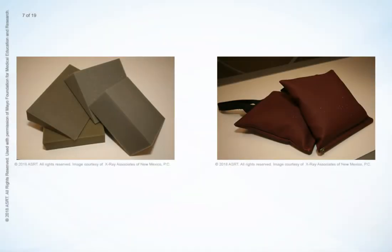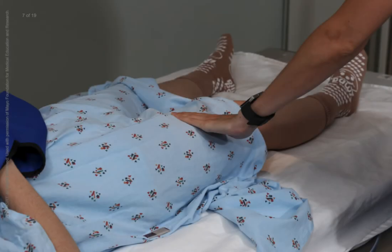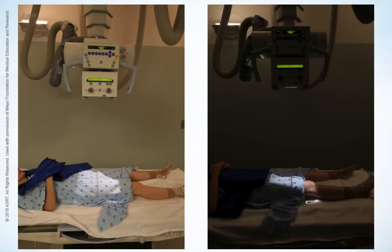A sandbag or positioning sponge can be used to help the patient maintain the correct position if needed. The top of the image receptor is placed at the level of the anterior superior iliac spine, or ASIS. A projection of the distal femur includes the knee joint. For the distal projection, the patient's leg is rotated internally until the foot is vertical and the leg is in true anatomical position. Make sure that the femoral epicondyles are parallel with the plane of the image receptor. The bottom of the image receptor is positioned 2 inches or 5 centimeters below the knee joint. The central ray is directed perpendicularly to the midpoint of the femur and the center of the image receptor. Anatomical markers are placed on the image receptor to identify the anatomical side being examined.